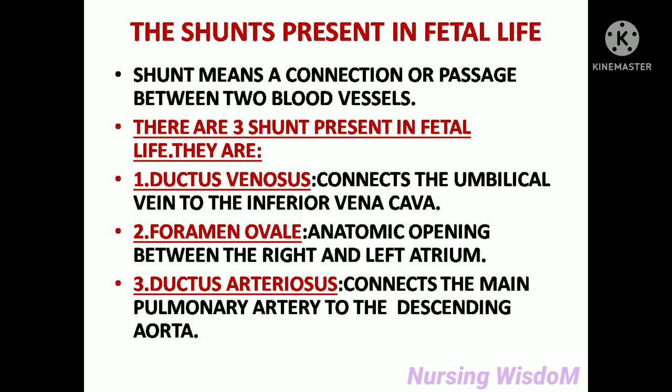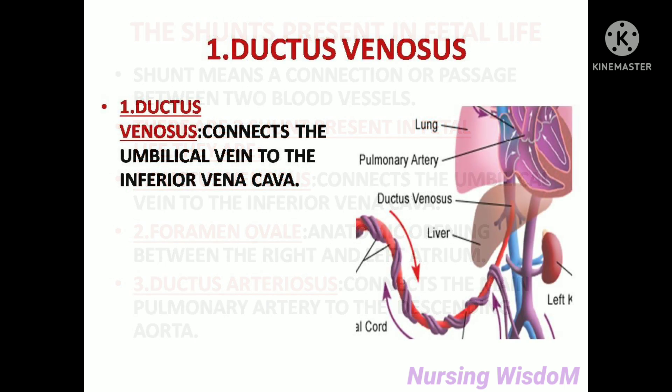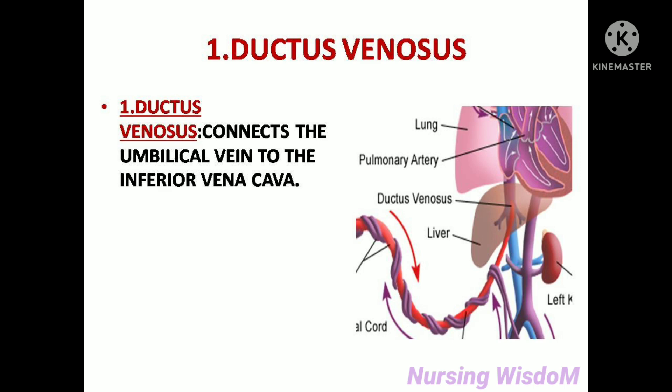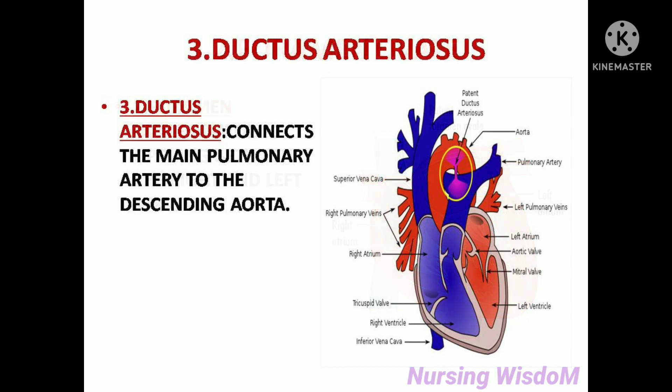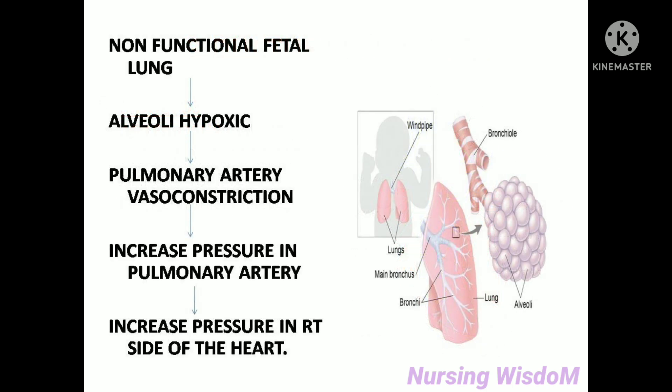The shunts present in fetal life — a shunt means a connection or passage between two blood vessels. There are three shunts present in fetal life: ductus venosus, foramen ovale, and ductus arteriosus. Ductus venosus connects the umbilical vein to the inferior vena cava. Foramen ovale is the anatomic opening between the right and left atrium. Ductus arteriosus connects the main pulmonary artery to the descending aorta.